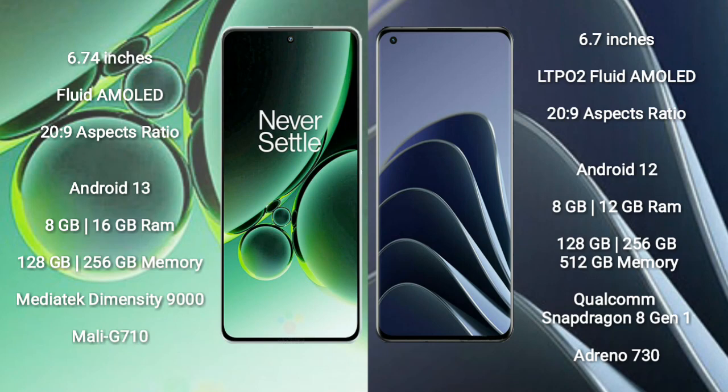OnePlus Nord 3 runs on the Android 13 operating system. It comes with 8GB or 16GB RAM and 128GB or 256GB internal storage, powered by the MediaTek Dimensity 9000 processor with Mali-G710 GPU.